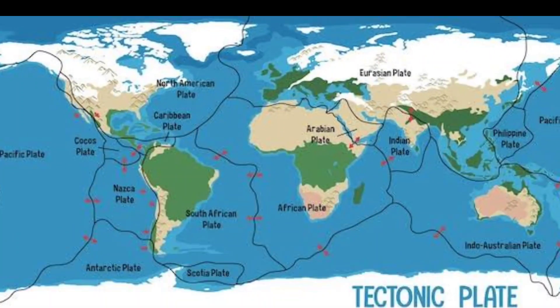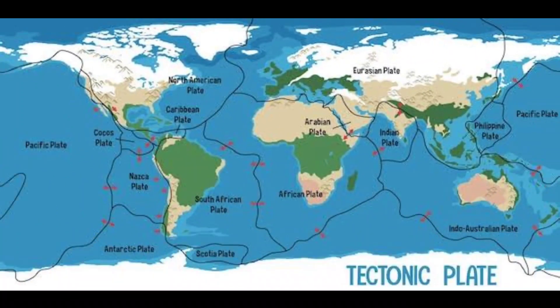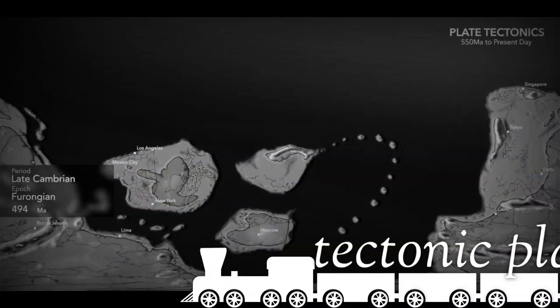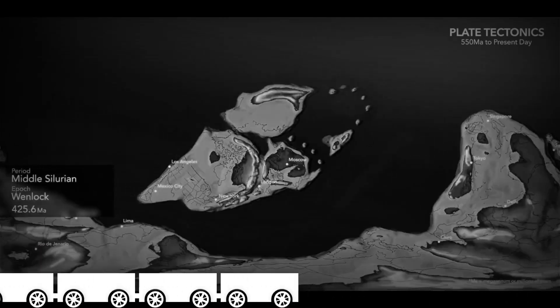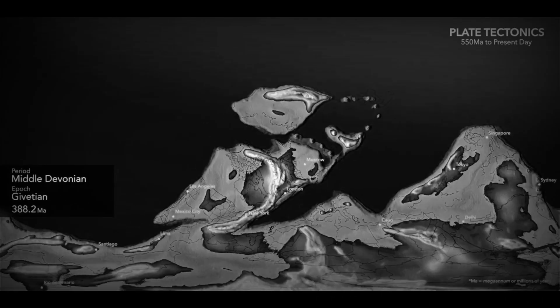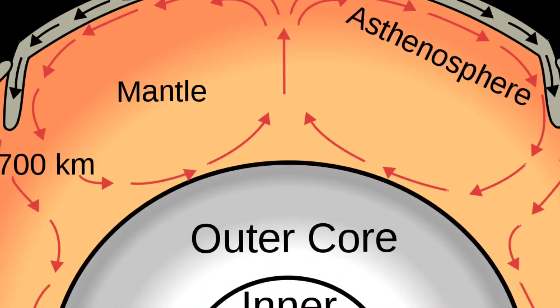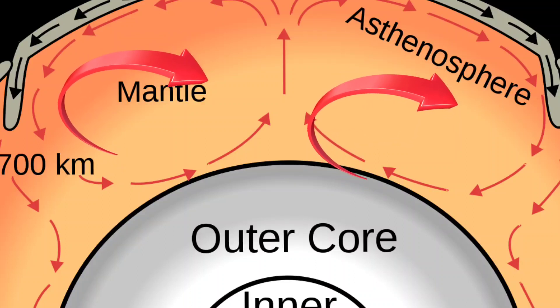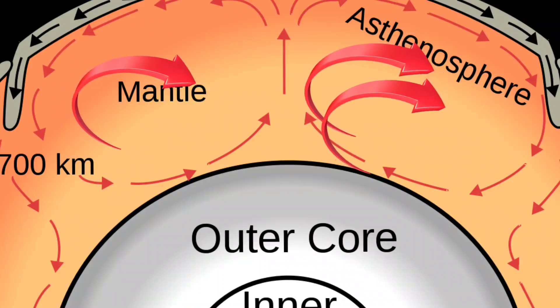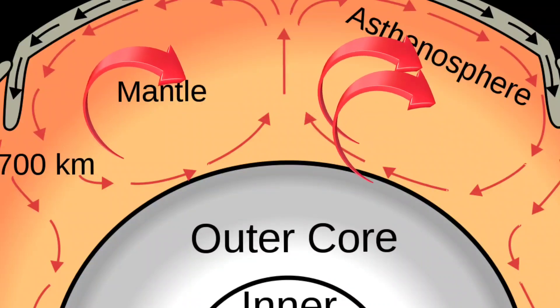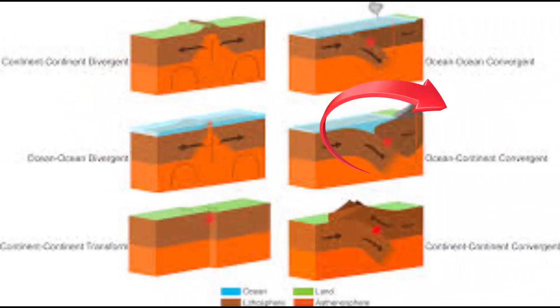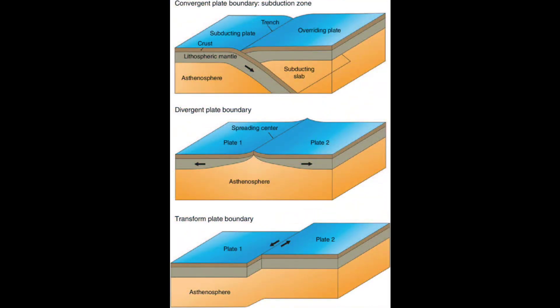There are seven large plates and many minor plates. Around 350 million years ago there existed a supercontinent known as Pangea. Pangea was divided into seven continents due to the constant movement of tectonic plates, known as continental drift. This movement is driven by convection currents, which are continuous currents that move molten magma, causing tectonic plates to follow the path of the magma.